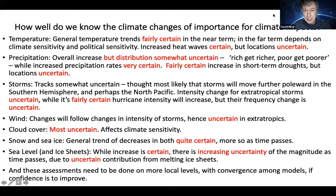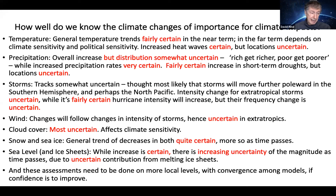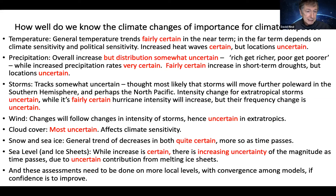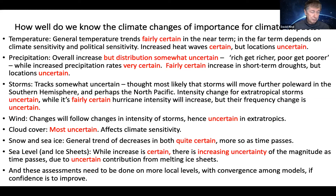The first slide asks: how well do we know the climate changes of importance for climate impacts? In red you'll see words such as 'certain,' 'most uncertain,' et cetera. IPCC has their own probability scale — for example, 'very likely' is 90 to 100% probability, 'likely' is 66 to 100% probability. I specifically did not use those probability terms here, because this is my take on what these things are for climate change impacts. There's a general correspondence but it's not necessarily one-to-one. We'll go through the different parameters, starting obviously with temperature.